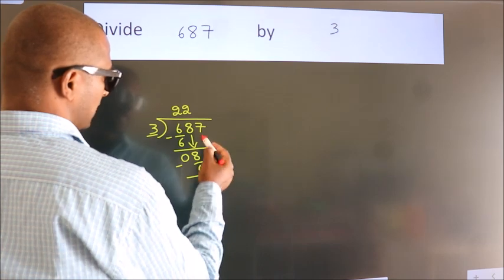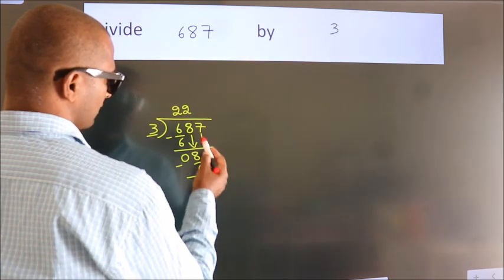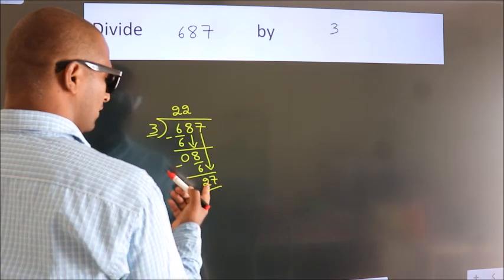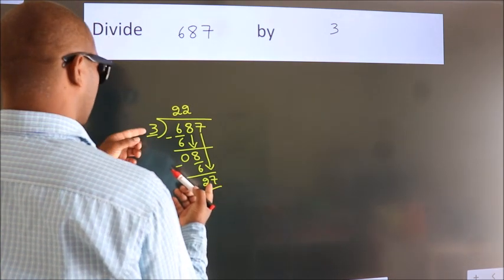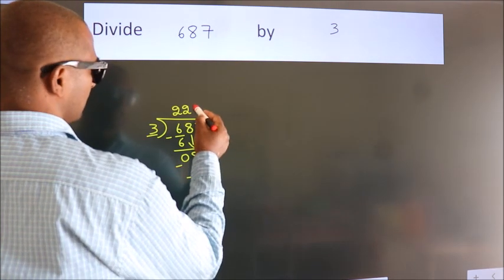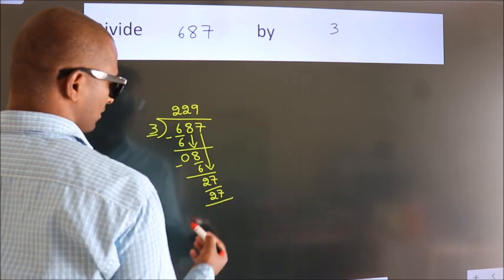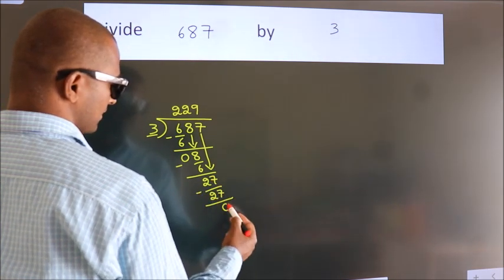After this, bring down the beside number. So 7 down, so 27. When do we get 27 in the 3 table? 3 times 9 is 27. Now we subtract. We get 0.